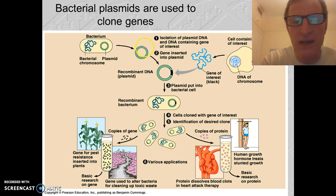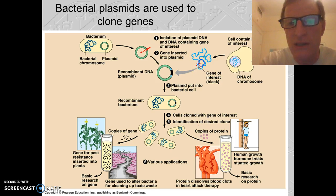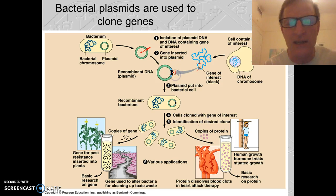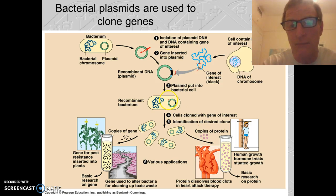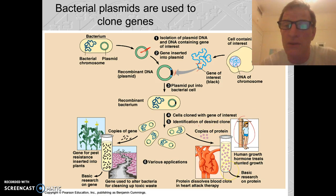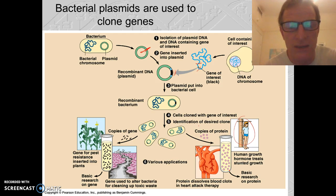We can take that plasmid and cut it with a restriction enzyme. We can also take a gene — let's say the gene for insulin or human growth hormone — identify where that gene is, cut it out, and splice it into that DNA to create recombinant DNA. We can then insert that DNA back into the bacteria to create a genetically modified bacterium that will produce human growth hormone, insulin, or some other important human protein.